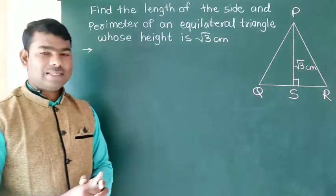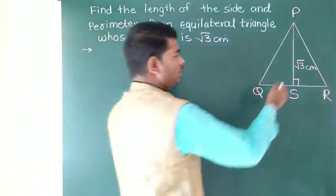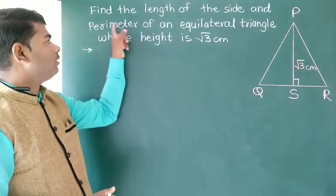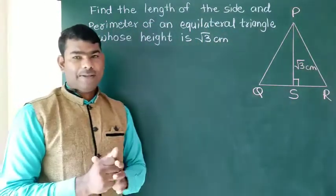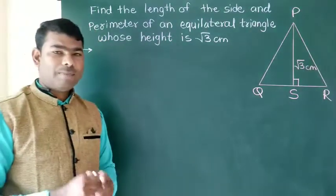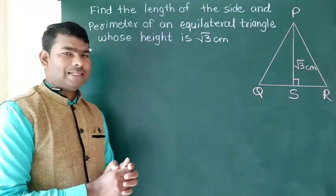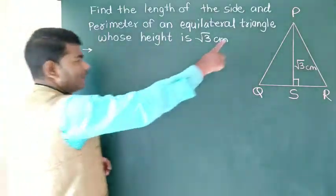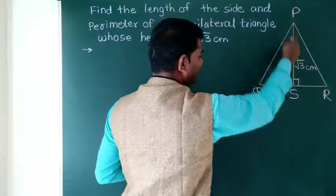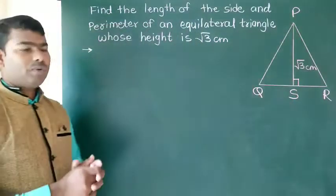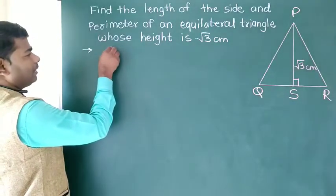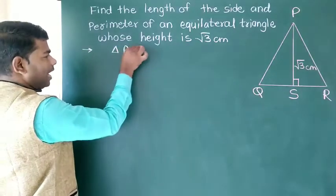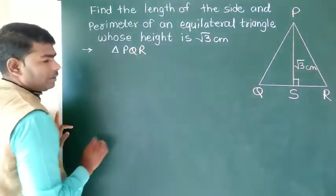We have an equilateral triangle. Its height is root 3 cm. We need to find the perimeter of this equilateral triangle. So, if you are looking at the triangle, the triangle is going to be equal to triangle PQR.